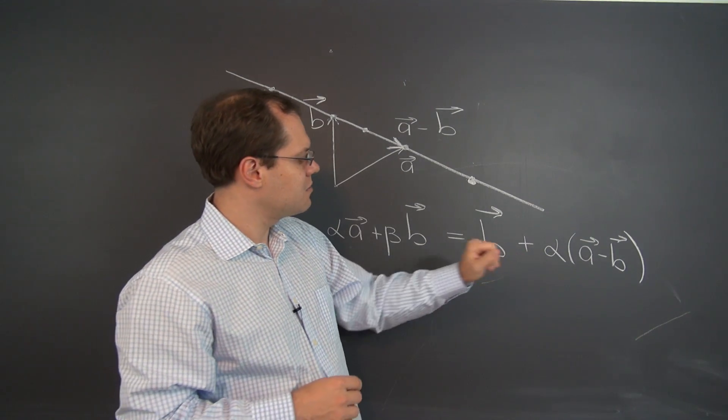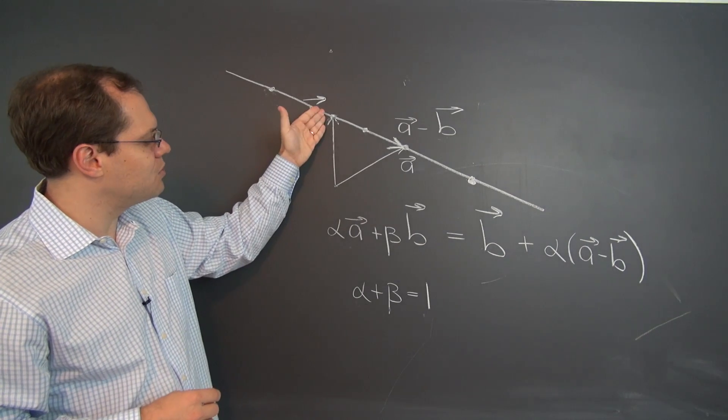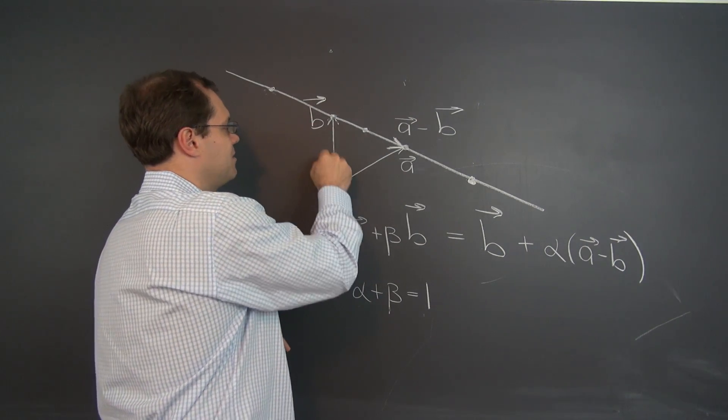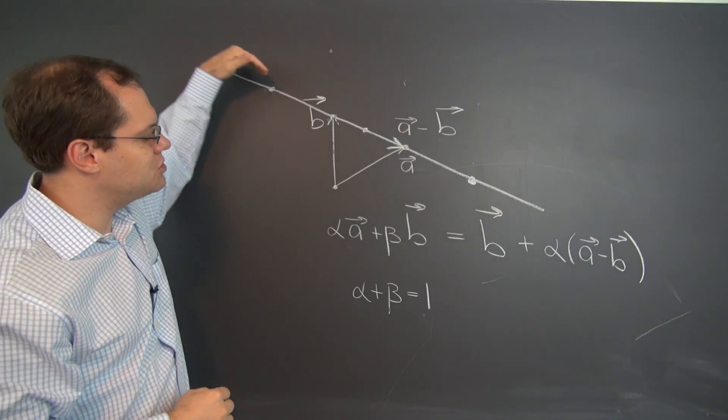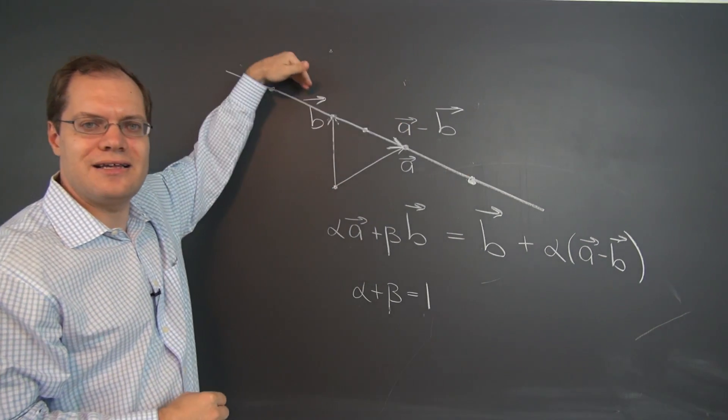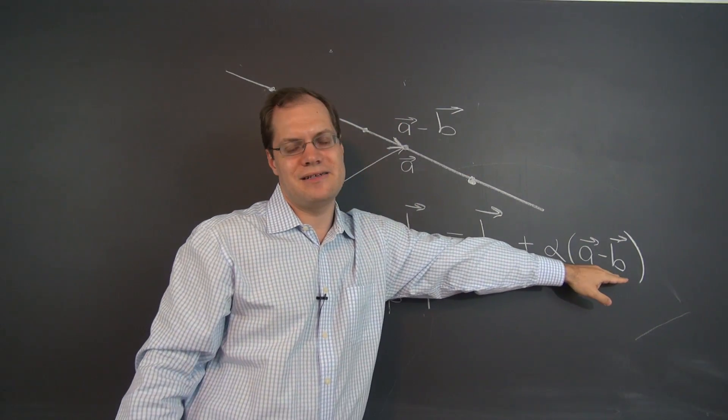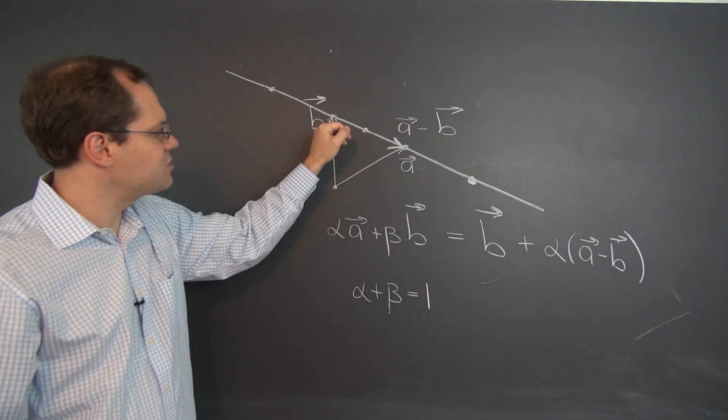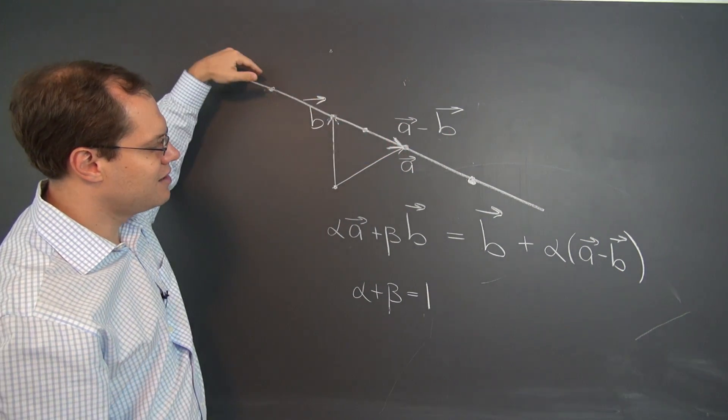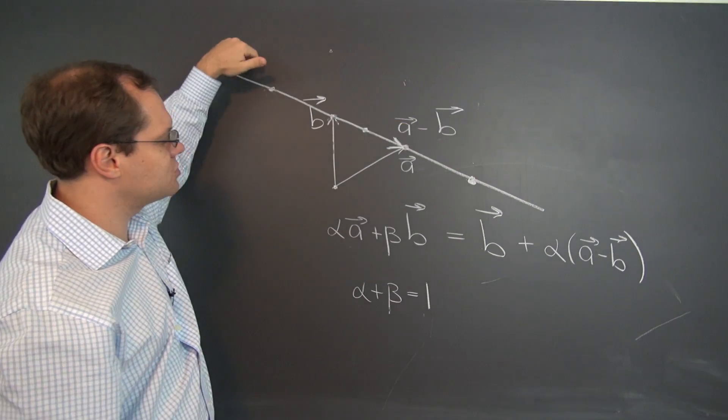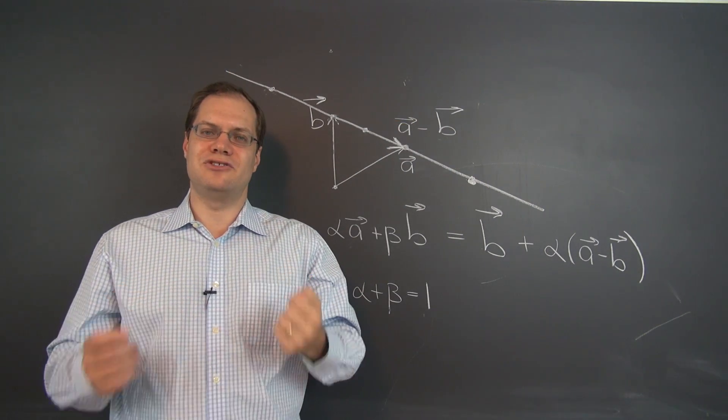So this way of writing tells us that we just start at this point, offset from the origin by the amount of the vector B. And then we just slide along this line that's defined by A minus B, which of course passes through B, passes through A, and just gives us the perfect picture of what's going on geometrically.